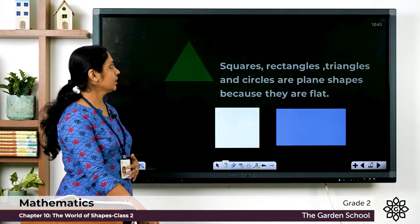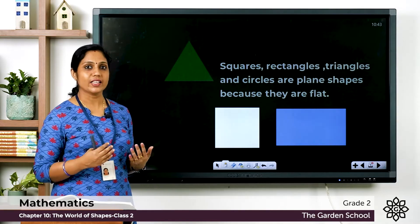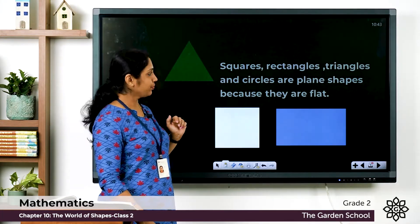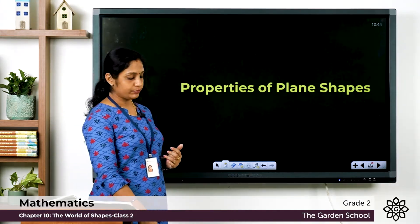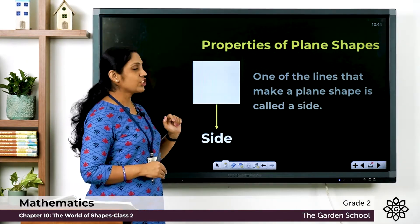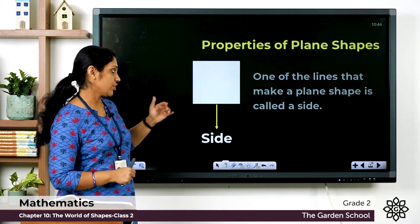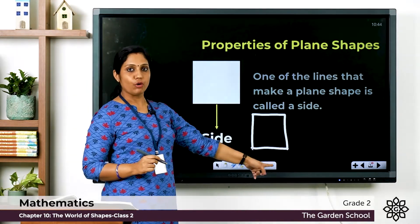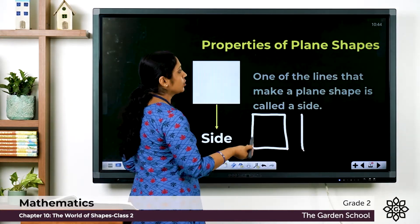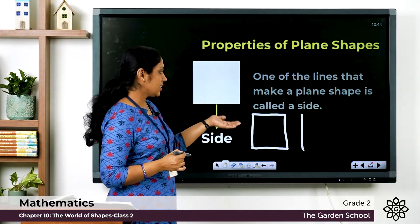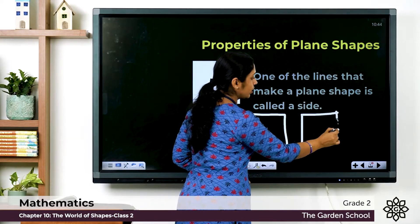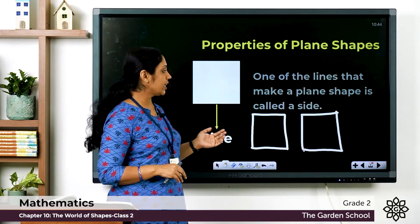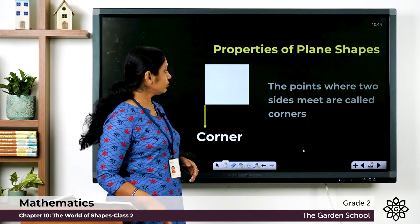We have learned about different shapes — triangles, rectangles, squares, etc. These shapes are plain shapes because they are flat. Now let's learn about the properties of plain shapes. One of the lines that make a plane shape is called the side. In this shape you can see there are four lines, so one line is called the side. This shape has four sides, also called four edges.